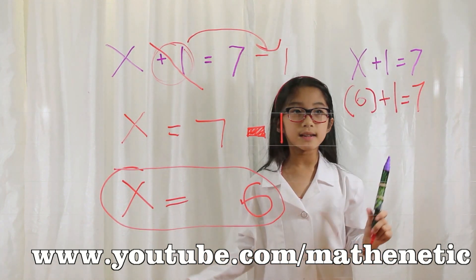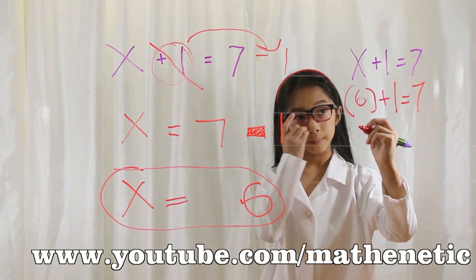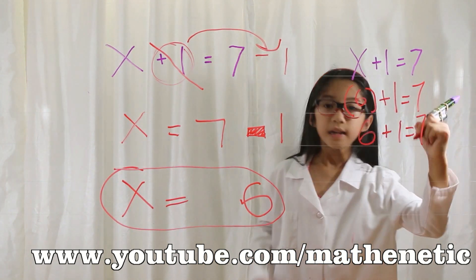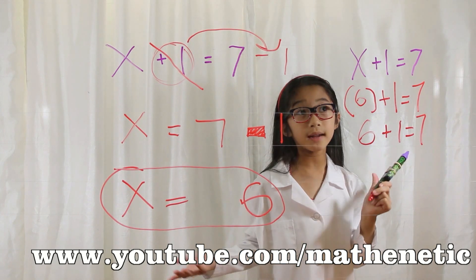6 is just 6. And then I'll bring the whole equation down. 6 plus 1 is 7, right? Check!